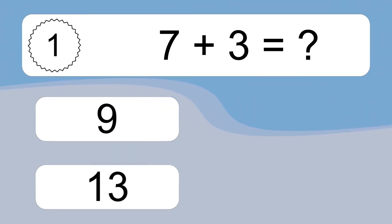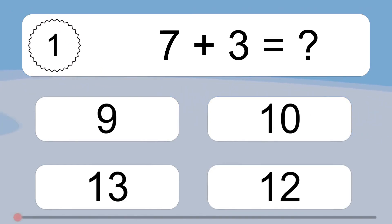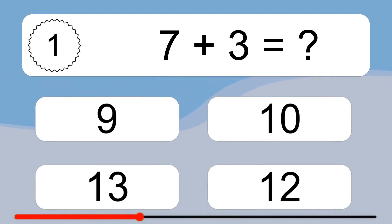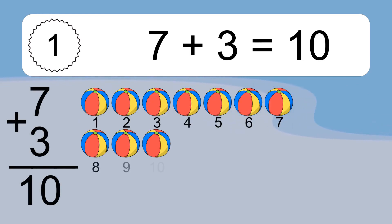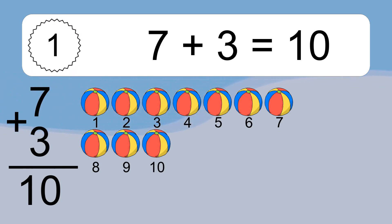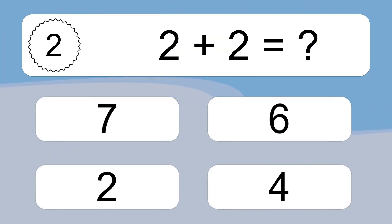7 plus 3 equals what? 7 plus 3 equals 10. Let's count it: 1, 2, 3, 4, 5, 6, 7, 8, 9, 10.